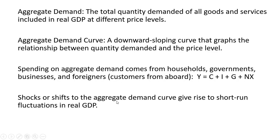Shocks or shifts to the aggregate demand curve give rise to short-run fluctuations in real GDP. A negative shock to aggregate demand may cause the economy to slip into a recession — falling real GDP, falling real incomes, and rising unemployment, for example.